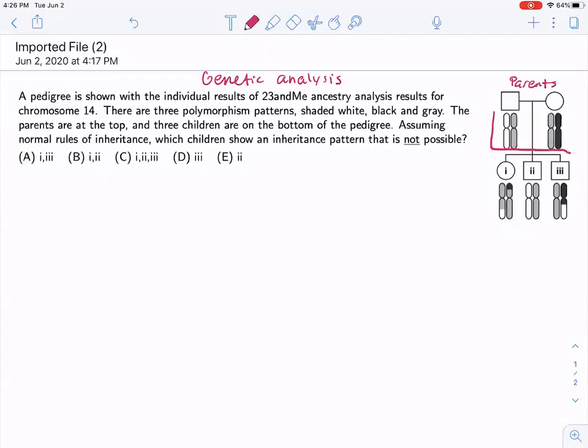Polymorphism patterns with the chromosomes. And then the children would be down here. Okay. And so we're asked, assuming the normal rules of inheritance, which of the children's inheritance patterns is not possible.